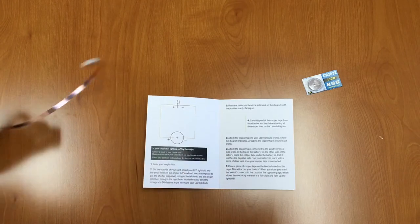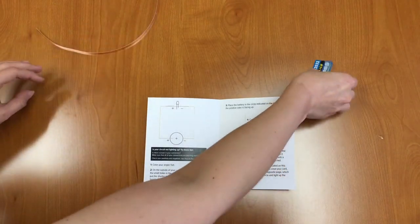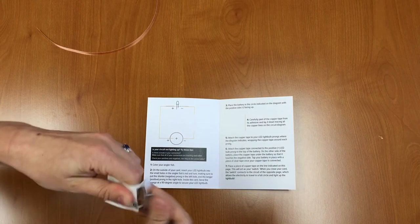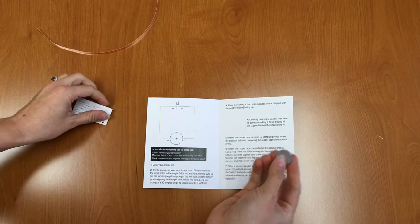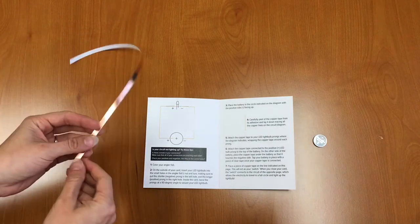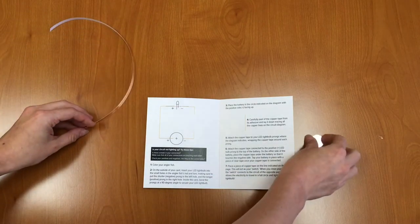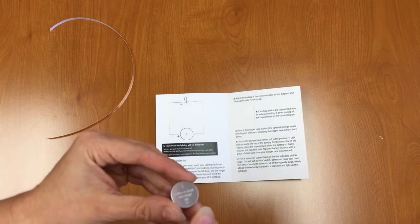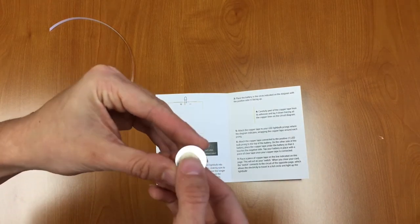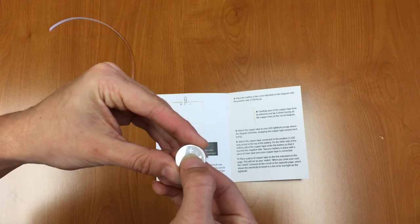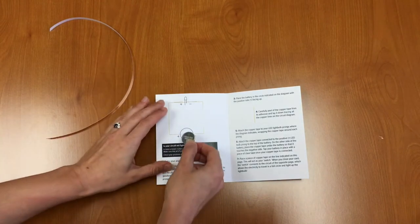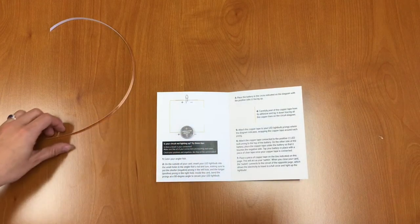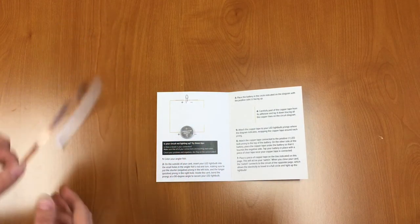Next, what we're going to do is we're going to take our battery out of the pack, out of its casing. So we have our battery now, we have that ready to go. And now we're going to place the battery in the circle indicated on the diagram with the positive side facing up. So as you can see, your battery has a plus sign on one side—that's the positive side. So you're going to place that in the circle with the plus sign facing up. Great, and don't worry about taping that down just yet; we can do that later.